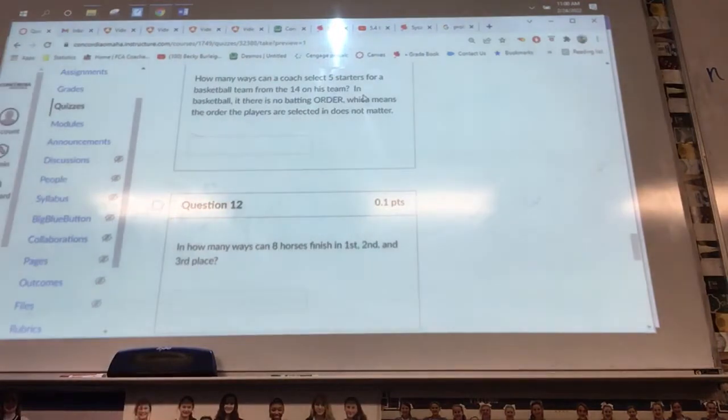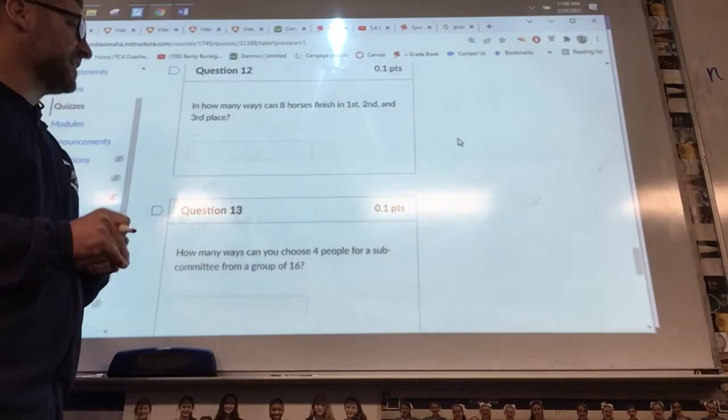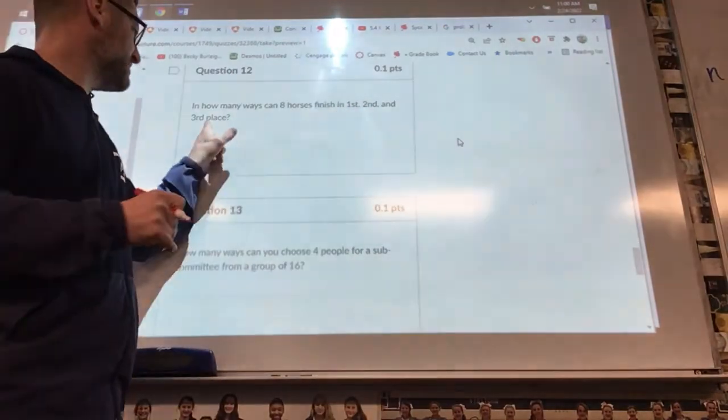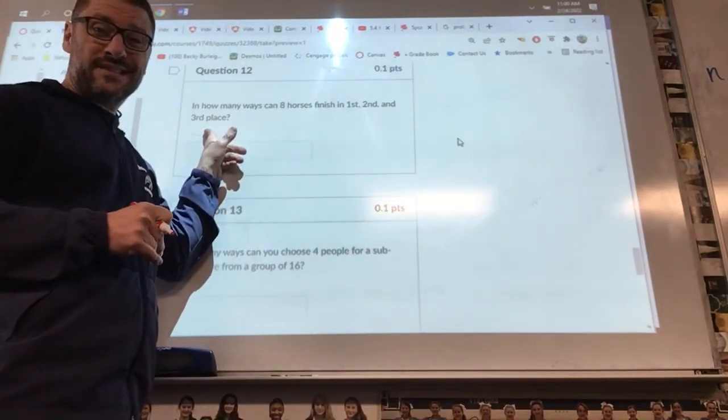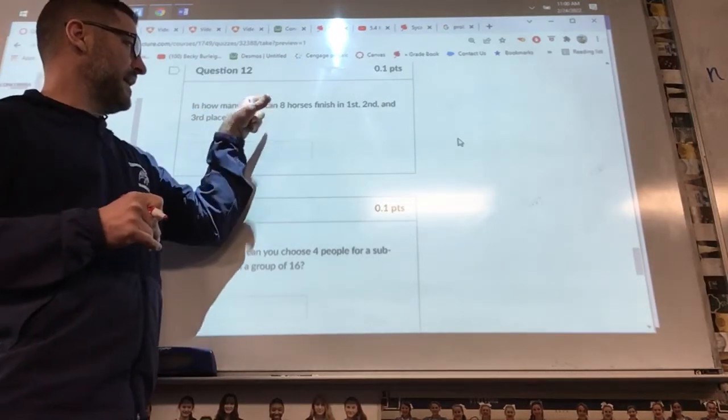Number twelve: in how many ways can eight horses finish in first, second, and third? Those are specific places. First is different than second and different than third. So the order would matter. Out of the eight horses, the order would matter for those three.